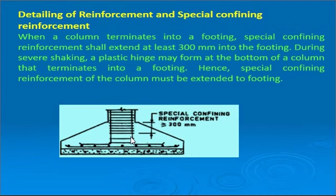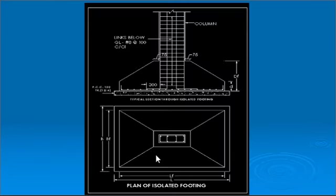The column bars must be extended into the footing for a distance of at least 300 mm. In the detailing of the isolated trapezoidal footing, main reinforcement is provided at the bottom as two-way reinforcement. The column bars are extended a minimum of 300 mm into the footing.